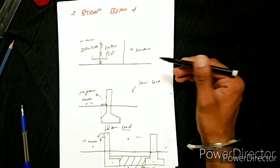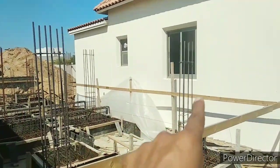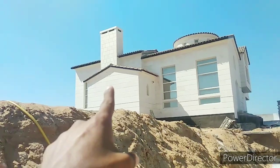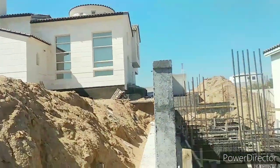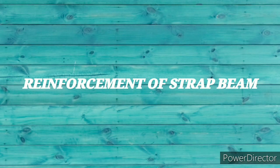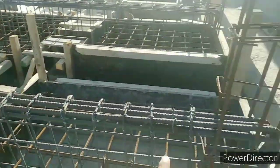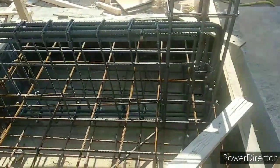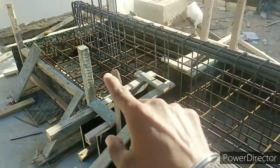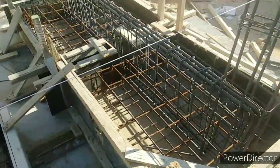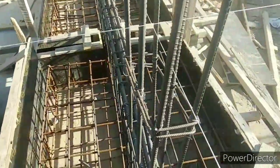Now I will show you how reinforcement is provided in a strap beam on site. As you can see, this is our existing villa and there is a neighbor villa with a boundary wall in between. In the space between these two villas we are constructing a new structure. Here you can see the actual strap beam, where these two foundations are connected with the strap beam to make it stronger and stable, distributing the load safely.